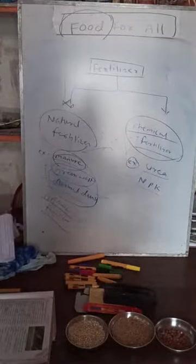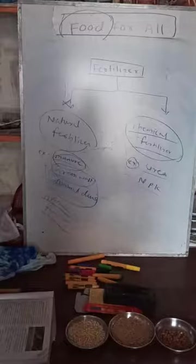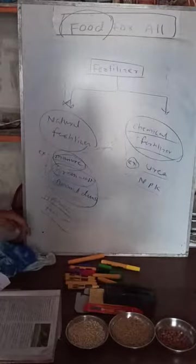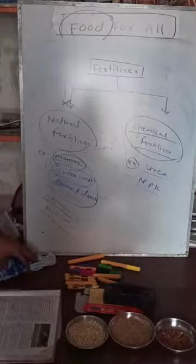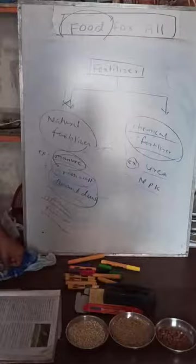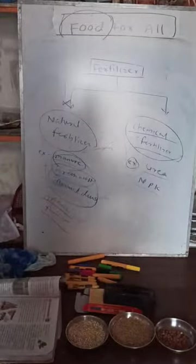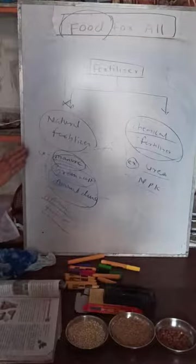You might ask: if chemical fertilizer is harmful, why use it? Because without chemical fertilizer, we cannot get plenty of food. When we got freedom, we were not using any chemical fertilizer. The Green Revolution came in 1970, and the credit goes to Dr. Swaminathan — he brought the Green Revolution. From that year, we started using chemical fertilizer for quicker growth and higher yields. For traditional agriculture, organic manures and composting were used.